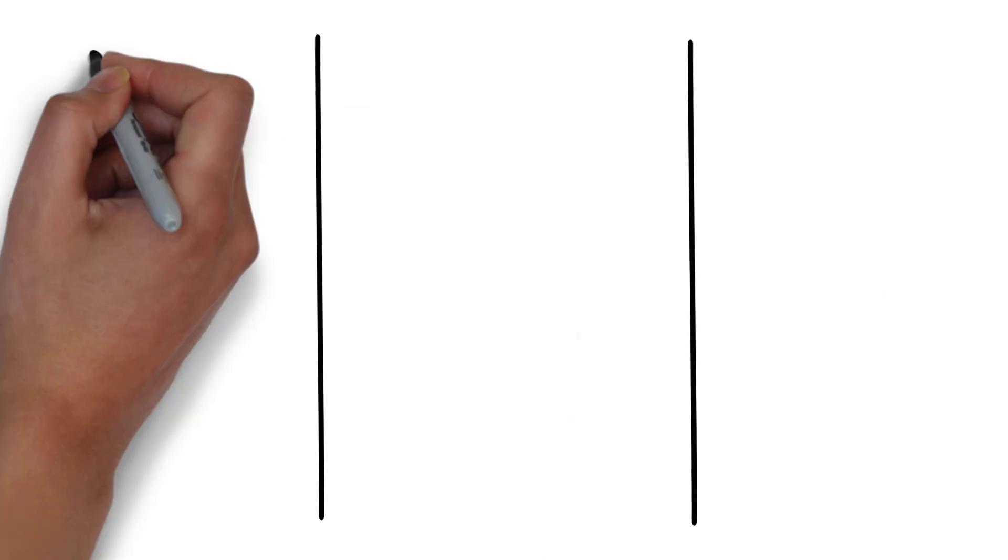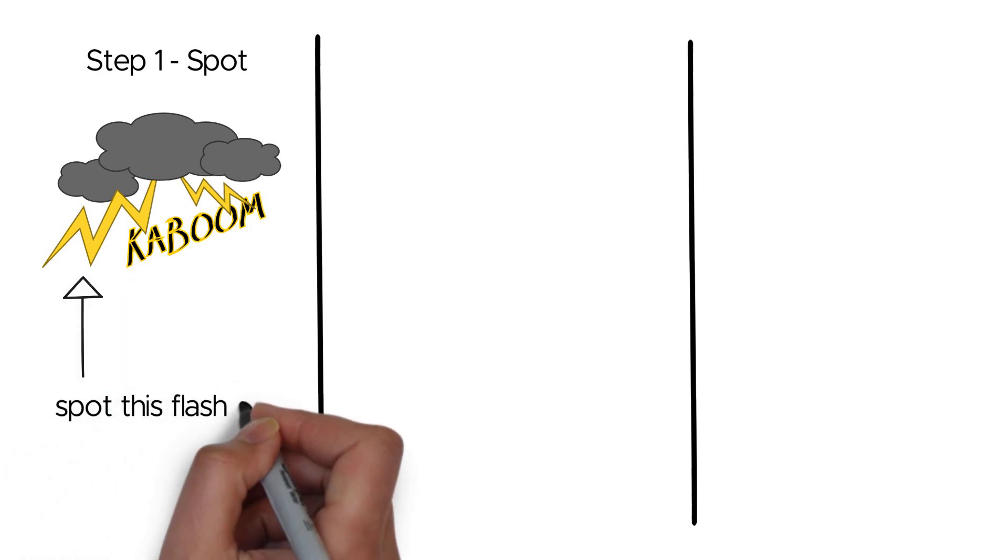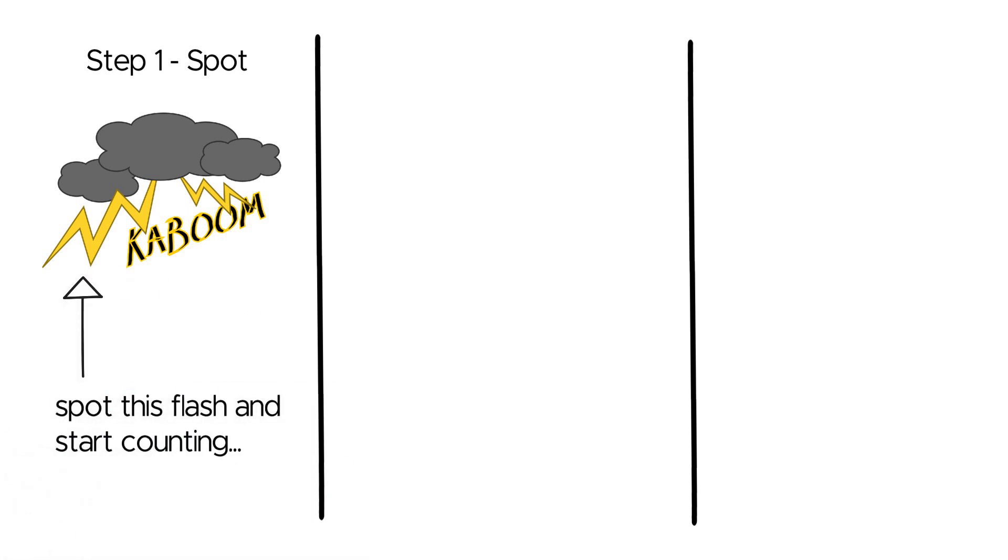When you see a flash of lightning, it means a lightning bolt has struck somewhere nearby. It's crucial to spot this flash as soon as possible to start the timing process.